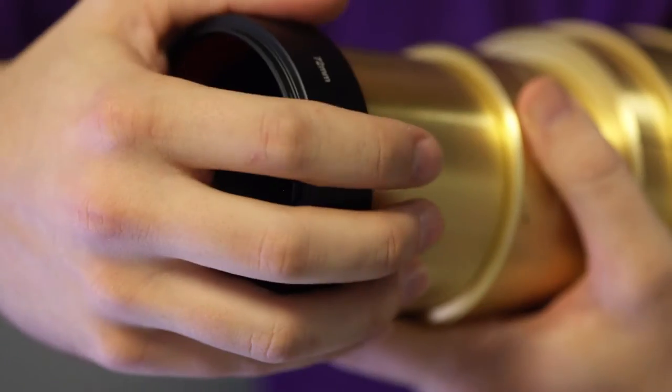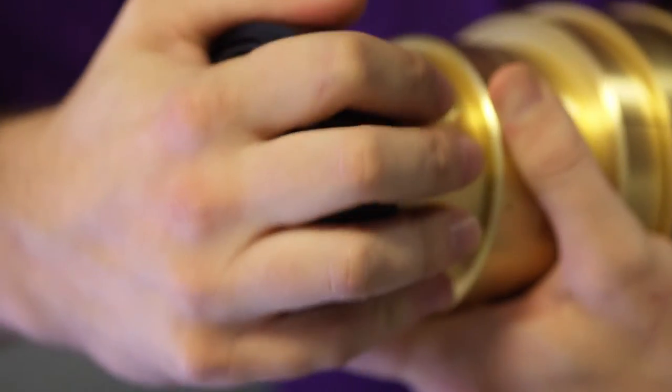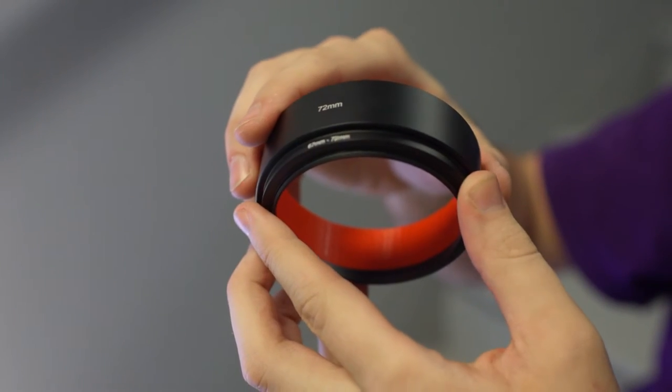The clamp is manufactured to fit precisely to the micrometer without any play, yet still be adjustable and removable. Our clamps come in 52, 58, and 72mm sizes. Step rings allow you to use these clamps with any lens available.